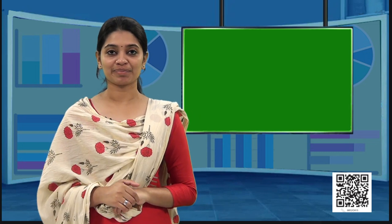From this example, you could make observation from the given graph. So now let us draw a graph from the given data. The number of days a hillside city received snow in different years given as: in the year 2003 it was 8 days, in the year 2004 it was 10 days, in the year 2005 it was 5 days, and in the year 2006 it was 12 days.